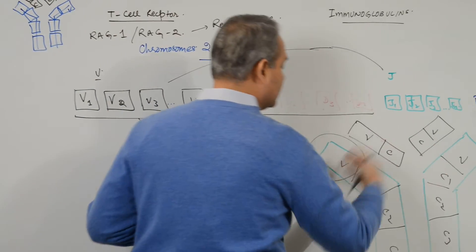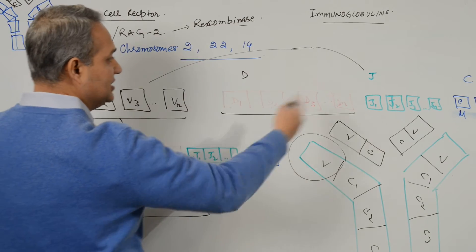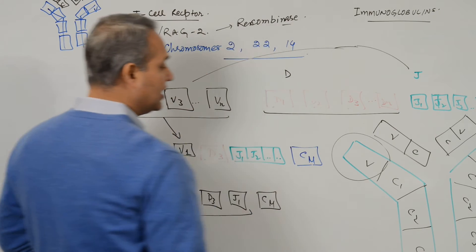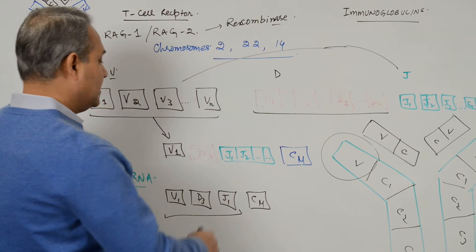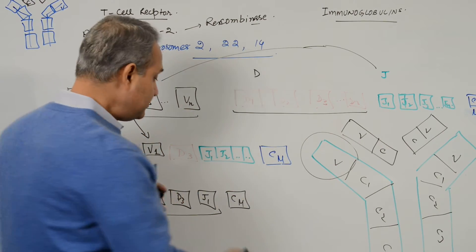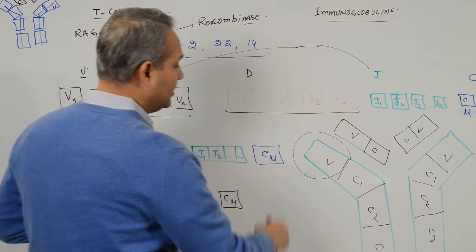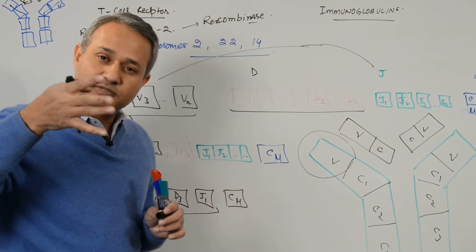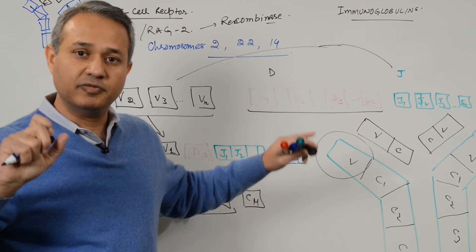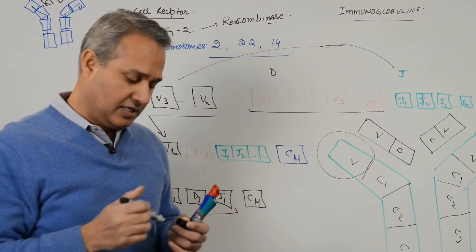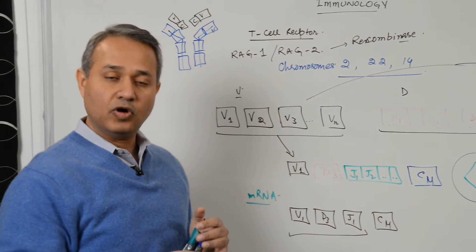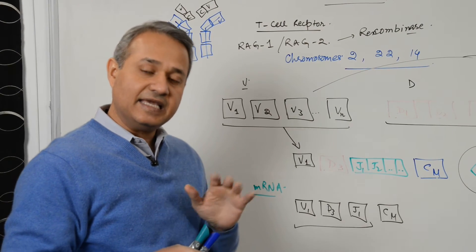Heavy chain variable region is recombination of V, D, and J. The constant part is all of them: V, D, J, and C. And that is the C which gives rise to this constant part. And what does class switching mean? Class switching means that instead of mu, we will put the G here, we will put D or E or A. And so this handle will be different while the variable region will be the same. So antigen specificity will be the same, but the function, biological function of the immunoglobulin molecule will be different. We will talk about those molecules later on. This is how an immunoglobulin molecule DNA rearrangement works.